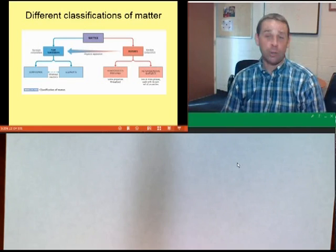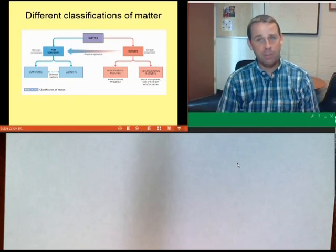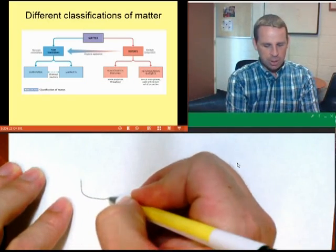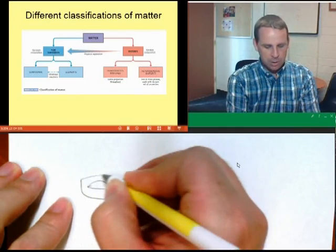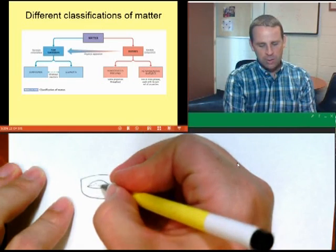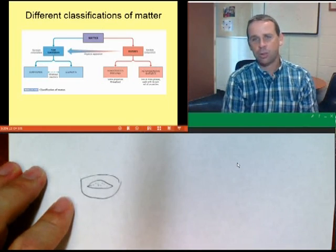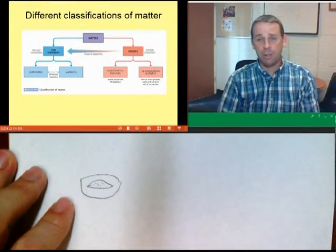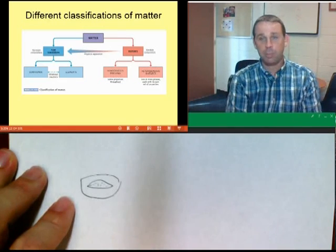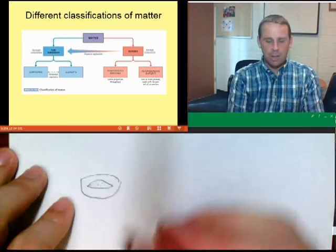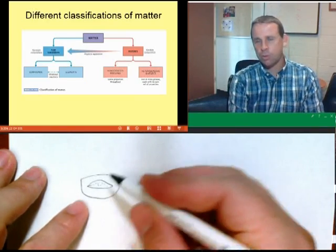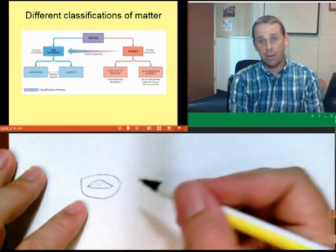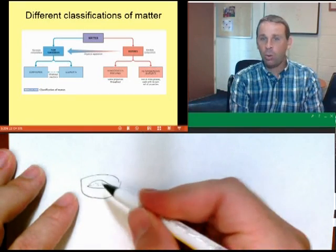Matter can be separated into pure substances or mixtures. A pure substance is where everything in your sample is all the same stuff. It doesn't need to be all the same element — if it was all gold, that's a pure substance, but it could also be all sodium chloride. You just need the ratio of atoms to be the same throughout the whole material.